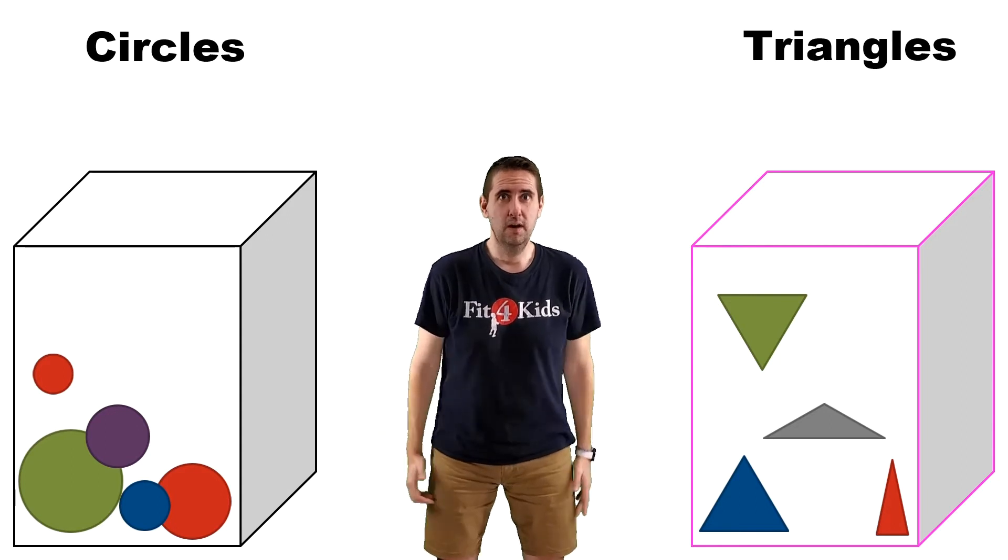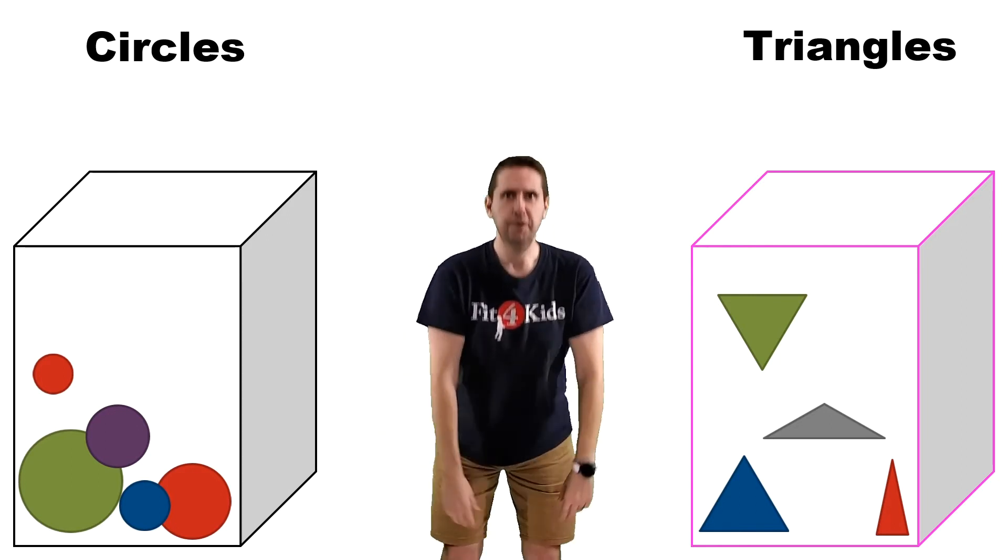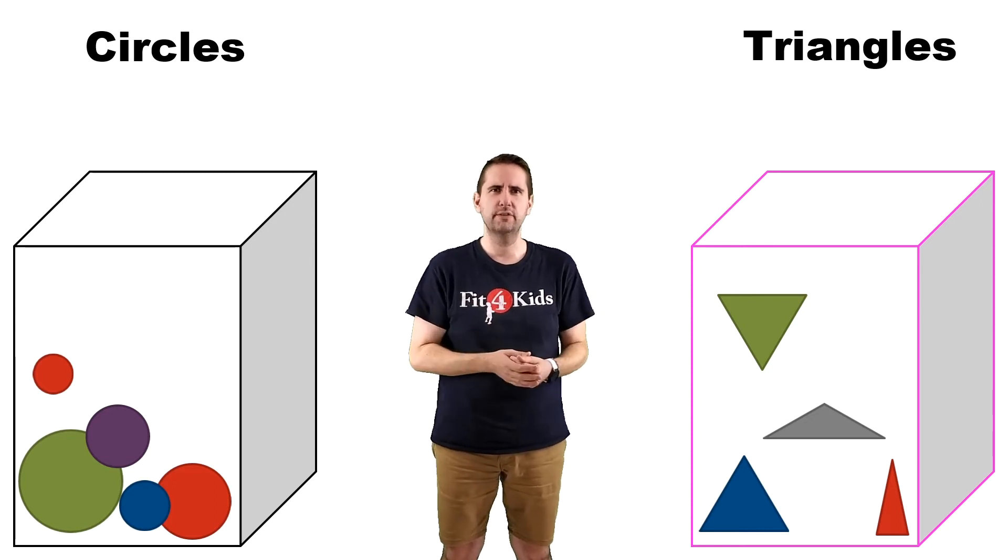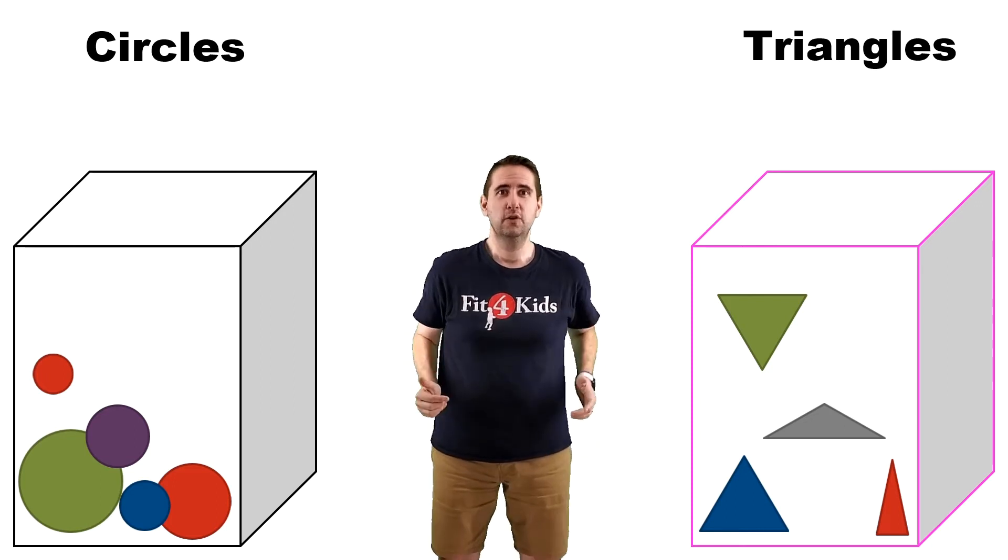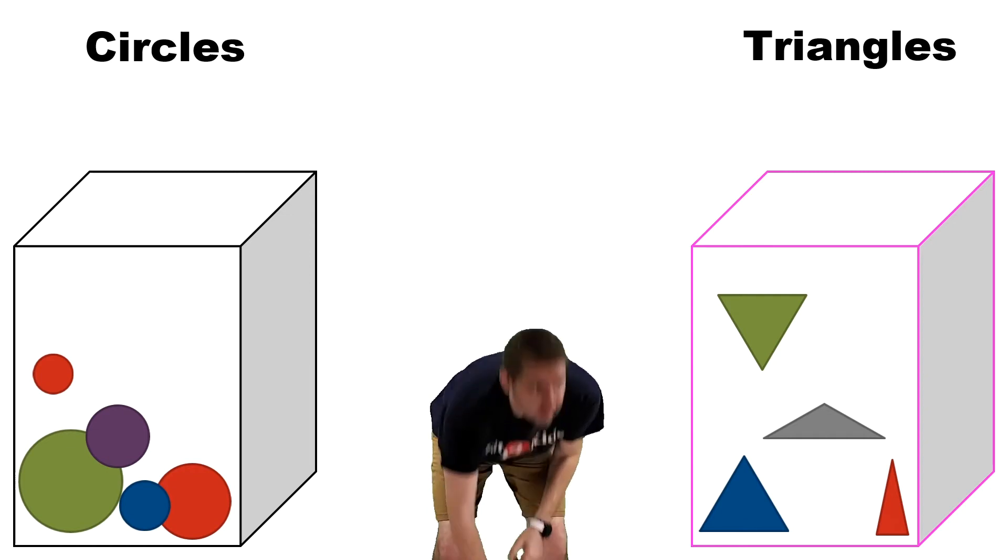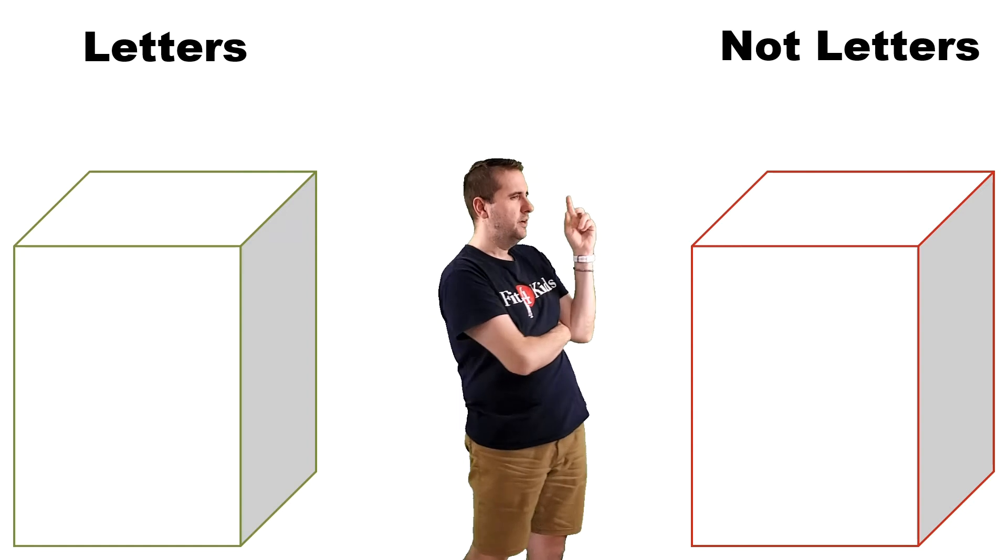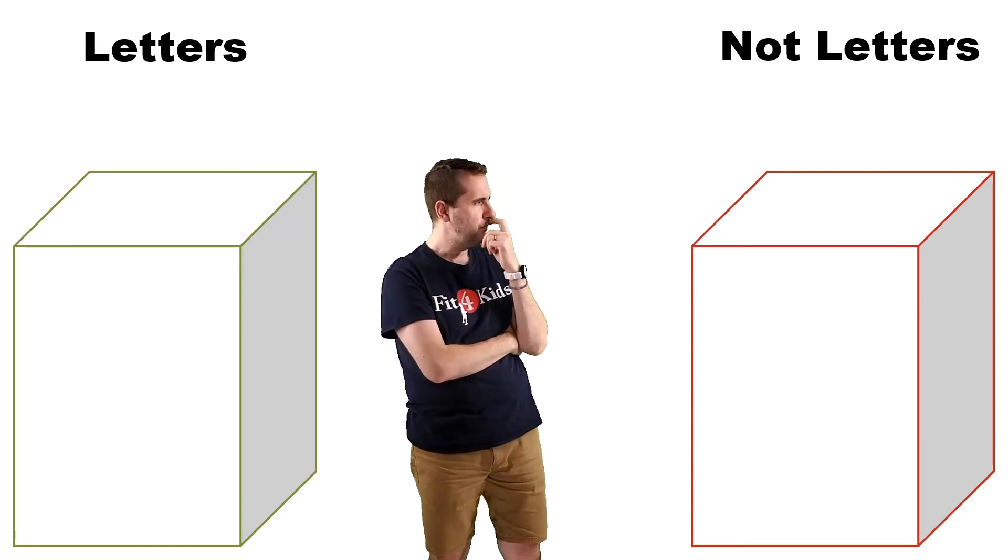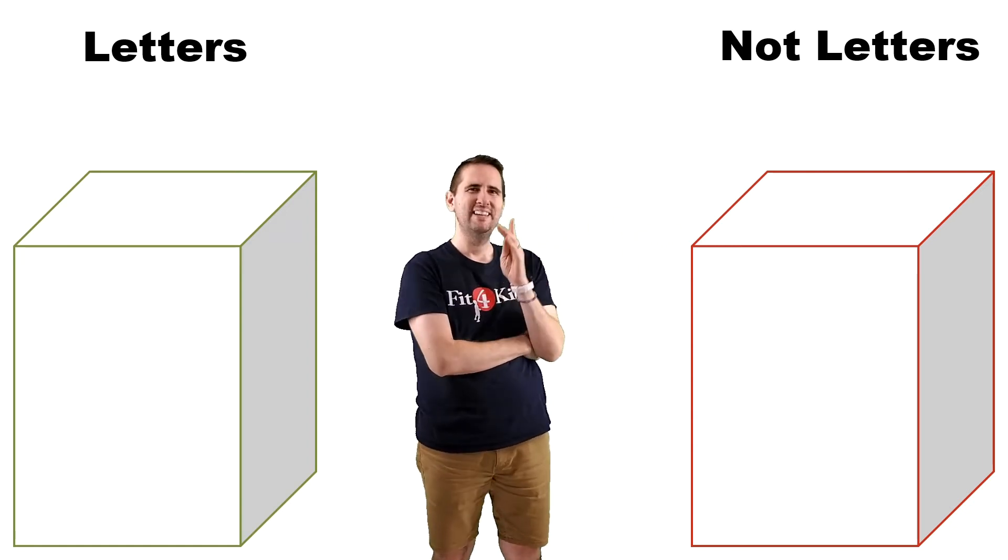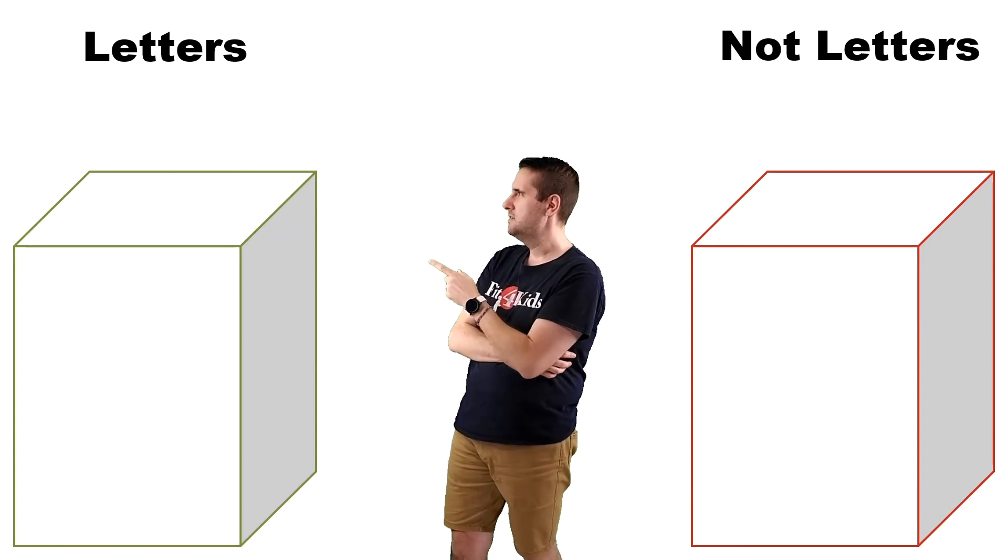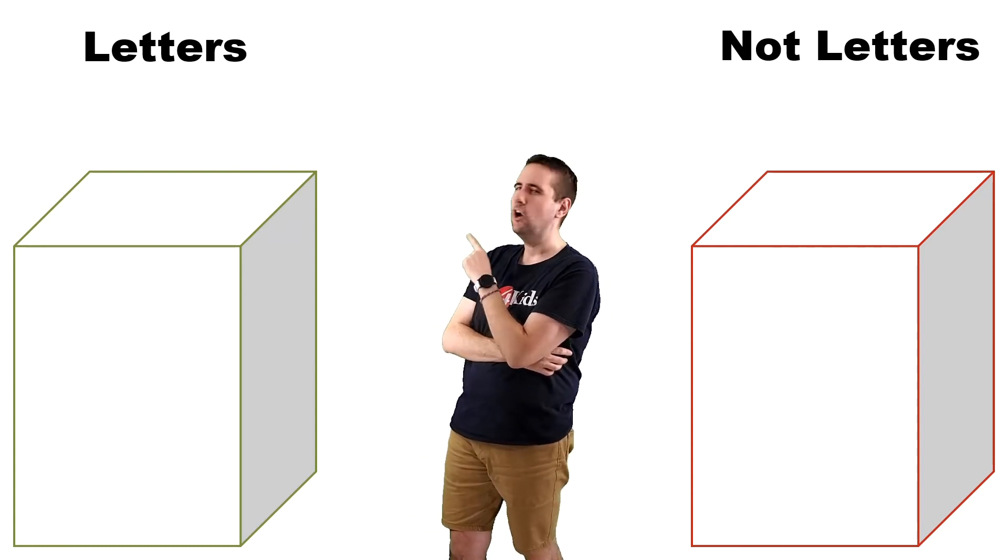All right. Here we go. We are going to go up on our tiptoes and then reach down and see if we can switch up this game. We don't want to do circles and triangles anymore. We want to do something new. Ready? Go on your tiptoes and reach down. All right. What do we got now? So over here, we have things that are not letters. And then over here, it looks like we have things that are letters.